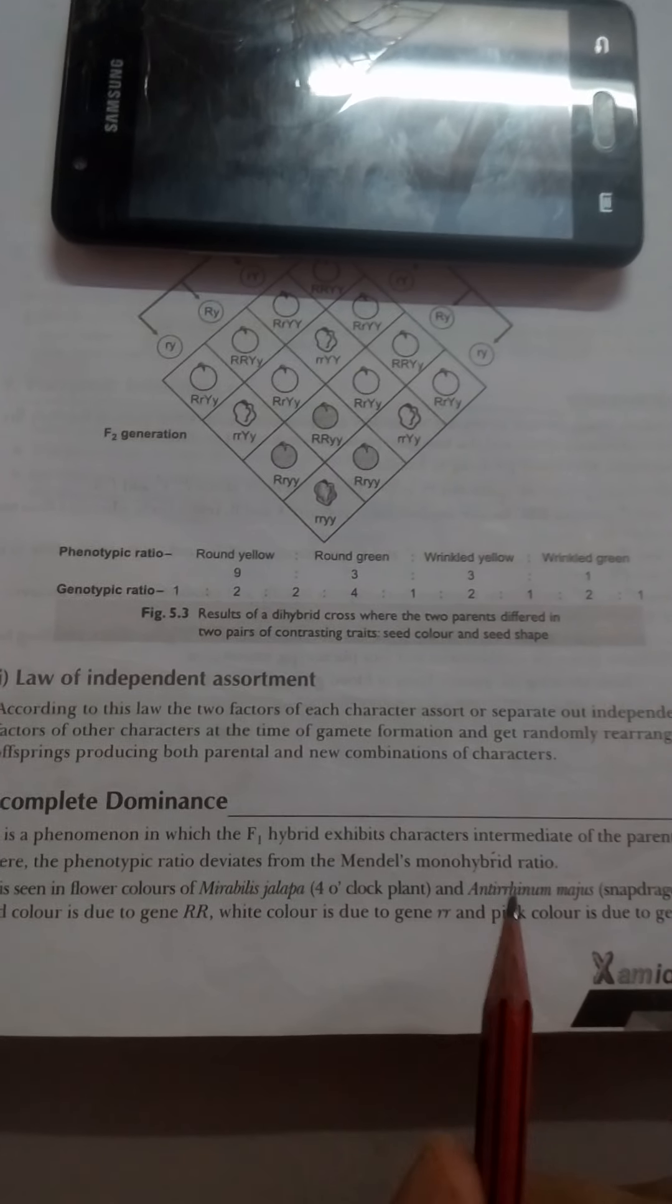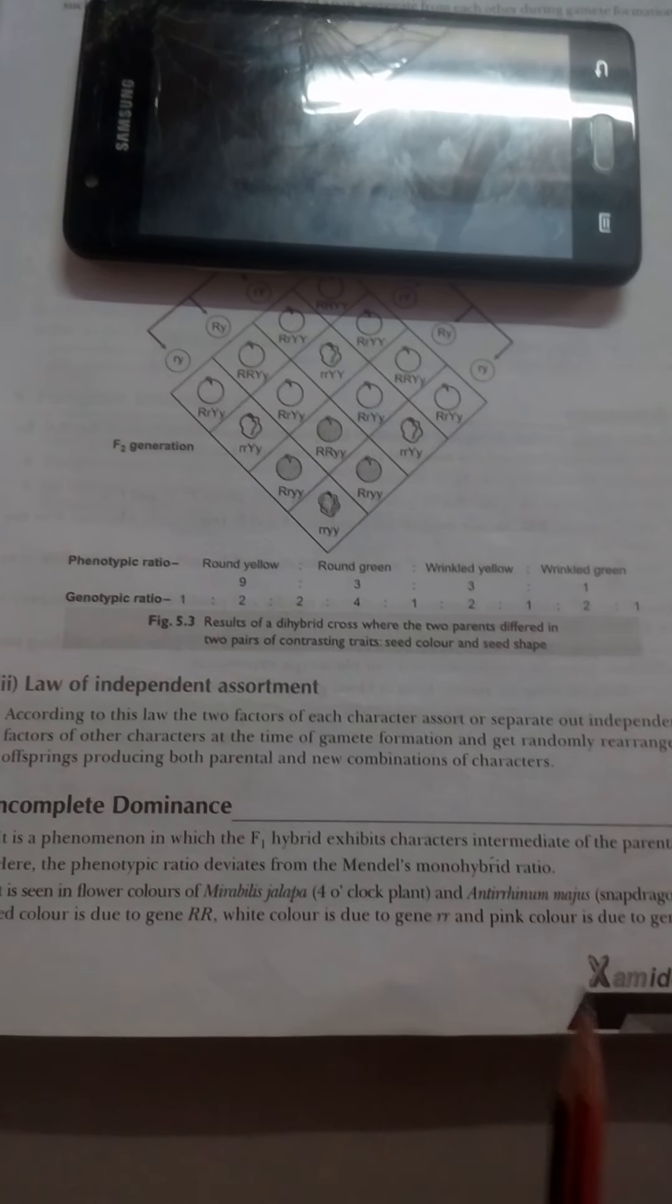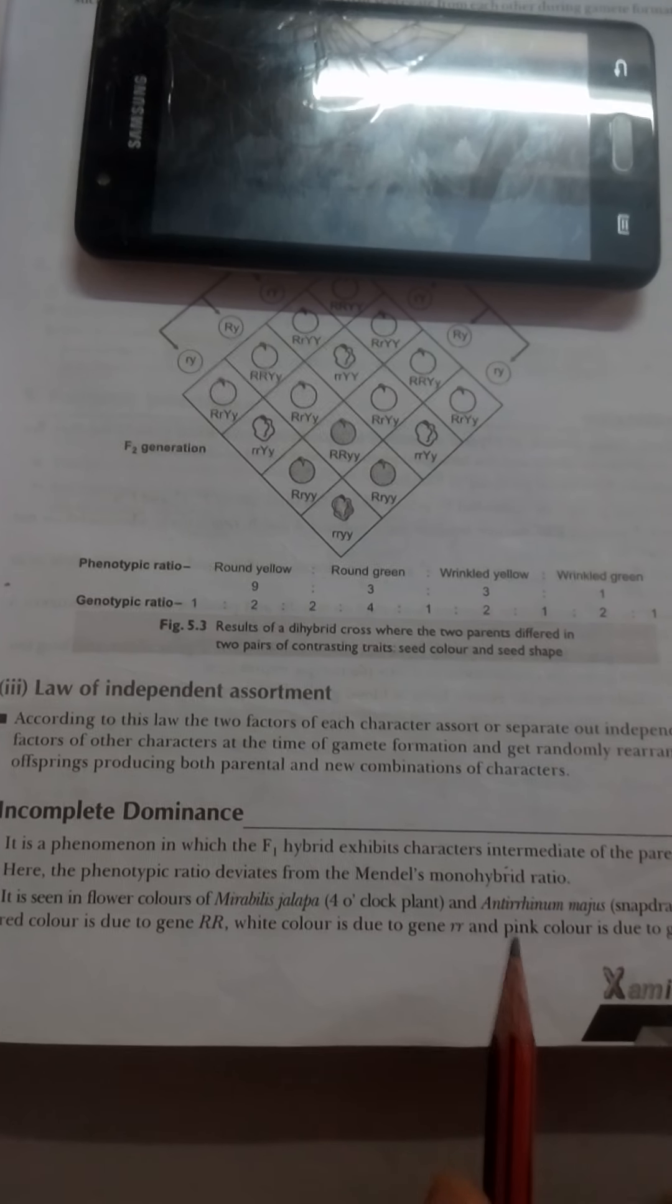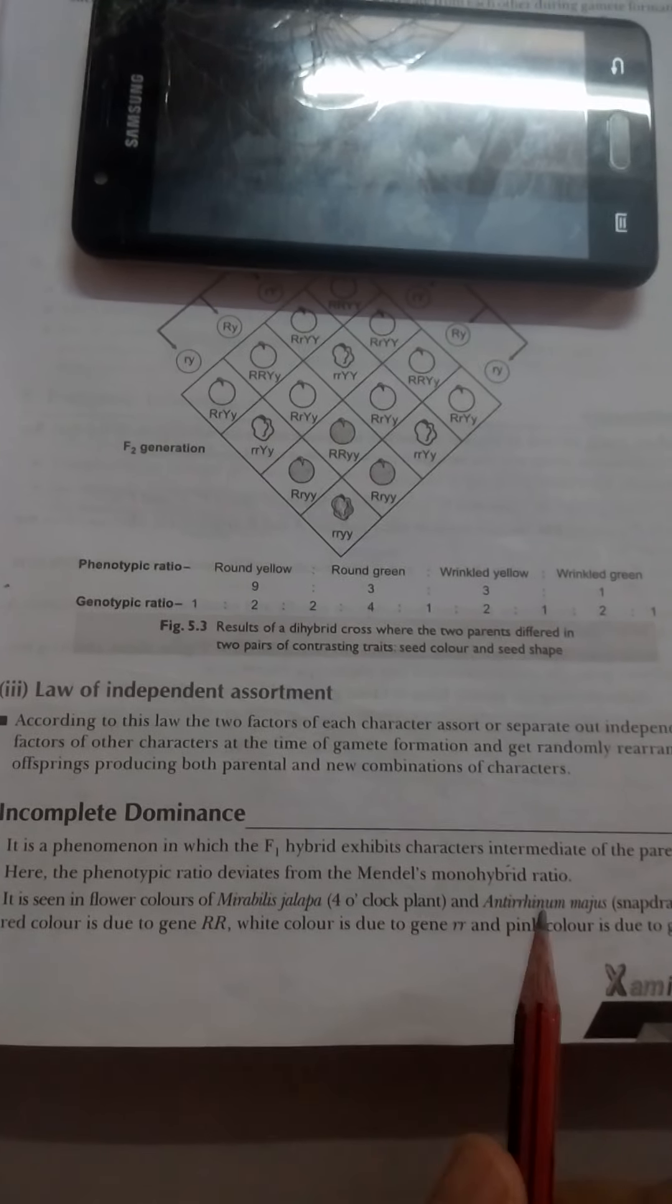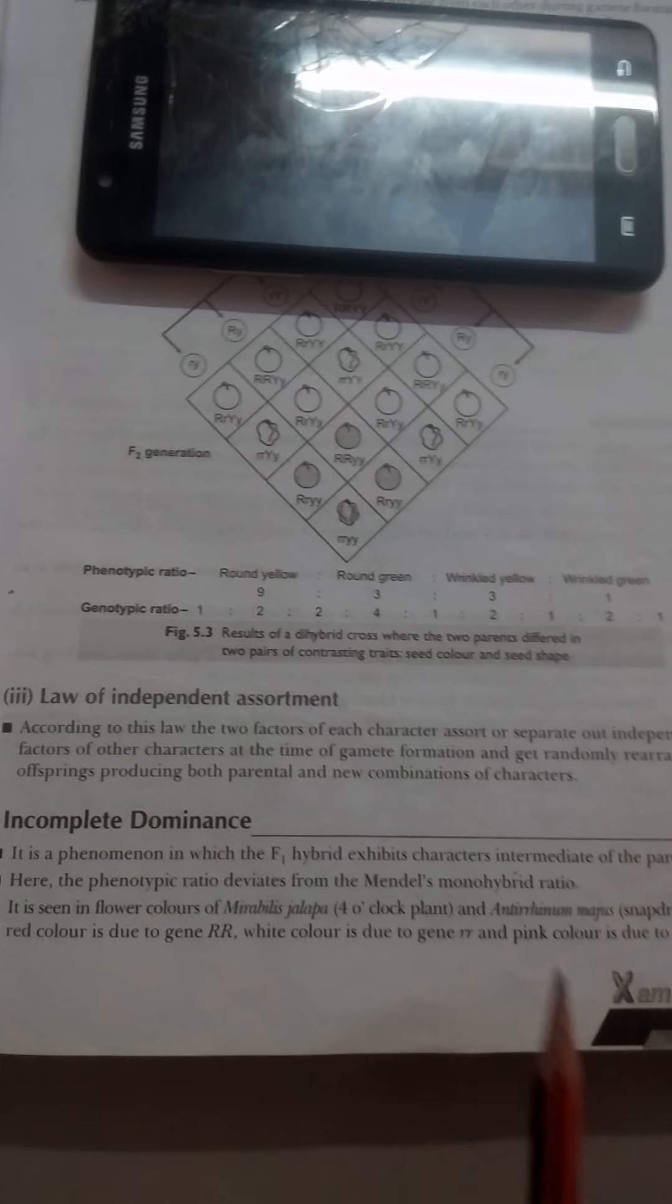Both the genotypic and phenotypic ratios of F2 generations are different in Mendel's experiments. But in incomplete dominance, it is a case where in F2 generation, both the phenotypic ratio and genotypic ratio are the same. That is one is to two is to one.